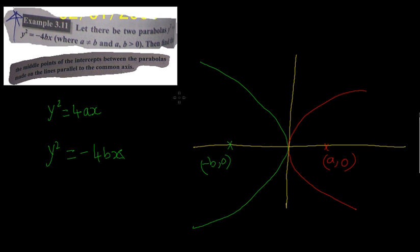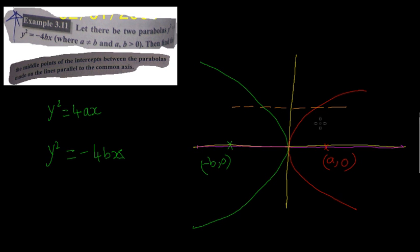We need the middle point of the intercept between the parabolas made on the line parallel to the common axis. What is the common axis? The common axis is the x-axis. Parallel to this common axis, we can draw a line — let's draw it in magenta. This is the line parallel to the common axis.